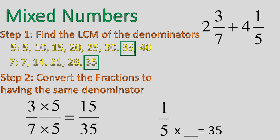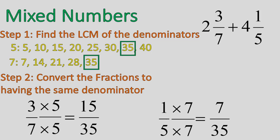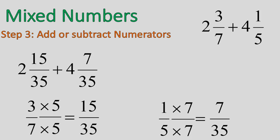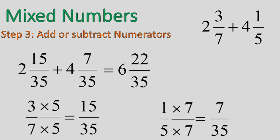For the second fraction: 5 times 7 gives me 35, so I multiply the top and bottom, getting 7 out of 35. I rewrite the question, including the whole numbers: 2 and 15 over 35 plus 4 and 7 over 35. I add the numerators 15 and 7 to get 22, and add the whole numbers 2 plus 4 to get 6, with the denominator remaining the same. This works exactly the same with subtraction — just subtract the numerators, and subtract the whole numbers.